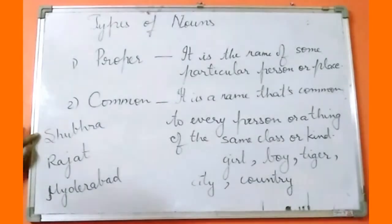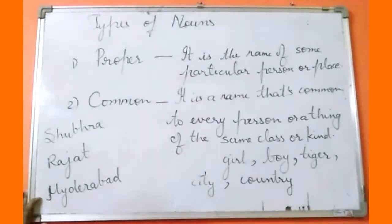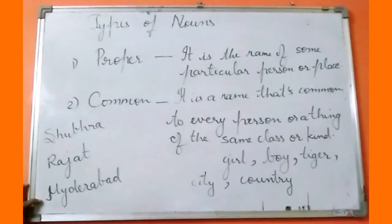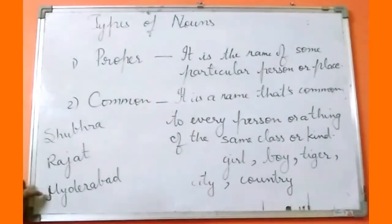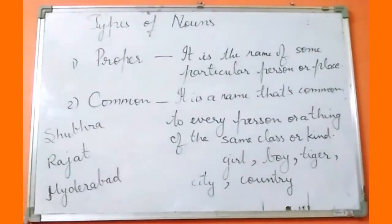For example, Shubhra — it is the name of a particular girl. Rajat — it is the name of a particular boy. Hyderabad — it is the name of a particular city. Therefore, the first letter S of Shubhra, R of Rajat, H of Hyderabad would be written in capital letters. A proper noun is identified by the capital letter at the beginning of the word. Many of you make this mistake — you write proper nouns in small letters, whereas proper nouns must always be written in capital letters.